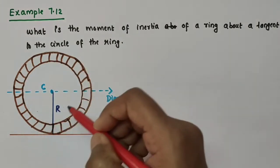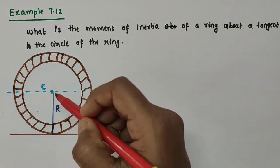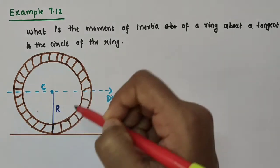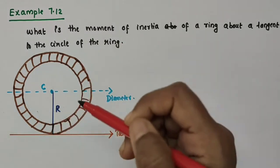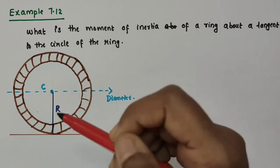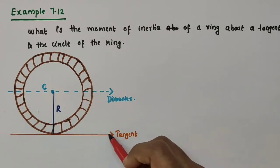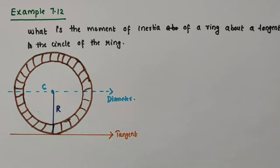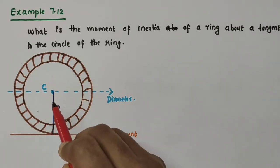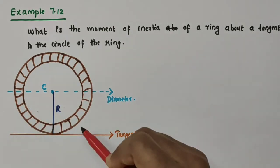Consider a ring of radius capital R. Let point C be the center of the circular ring. We want to find out the moment of inertia of the ring about a tangent to the circle of this ring. Let this orange-colored line be that tangent. I have also considered an axis which is along the diameter of the ring and is parallel to this tangent.